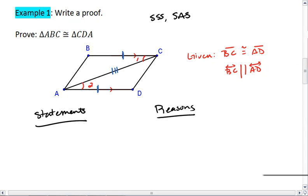So my first reason, or my first statement, is always whatever I was given. I'm given that BC is congruent to AD. I'm also given BC, line BC is parallel to line AD.